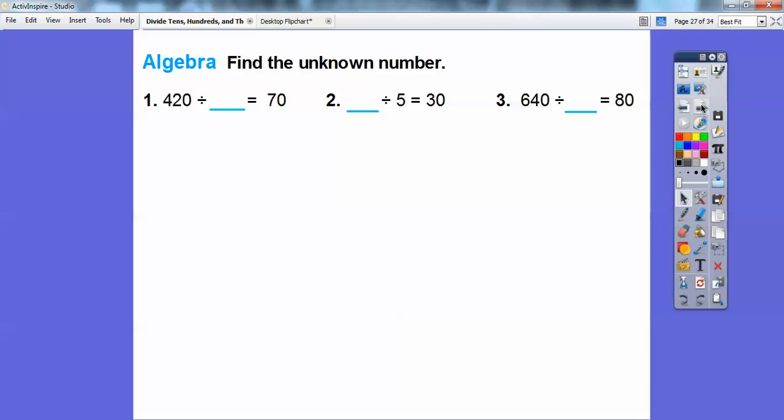Let's try to find the unknown number: 420 divided by what equals 70? Since they have 0s—I highlighted those—just think 42 divided by this number, which is 6, equals 7. And since that has a 0, it equals that 0 right there, giving us 70.